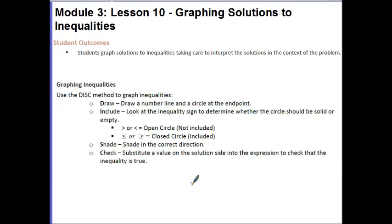The endpoint being the number that your variable is greater than or less than. I is where you decide if you're going to include by looking at the inequality sign to determine whether the circle should be solid or empty. If the inequality is simply greater or less, we would have an open circle because it means that the number is not included. If it's less than or equal to or greater than or equal to, that would mean a closed circle because the number is included in the solution.